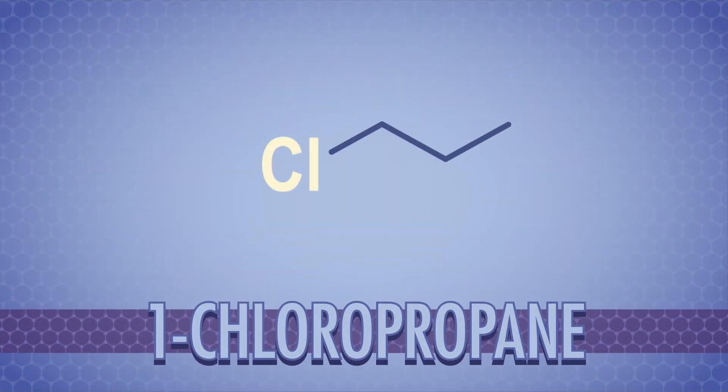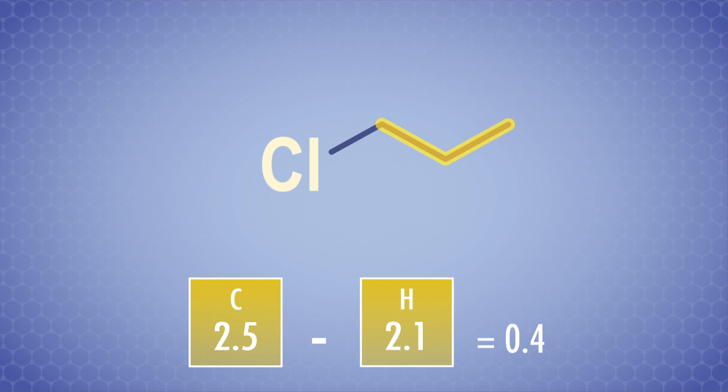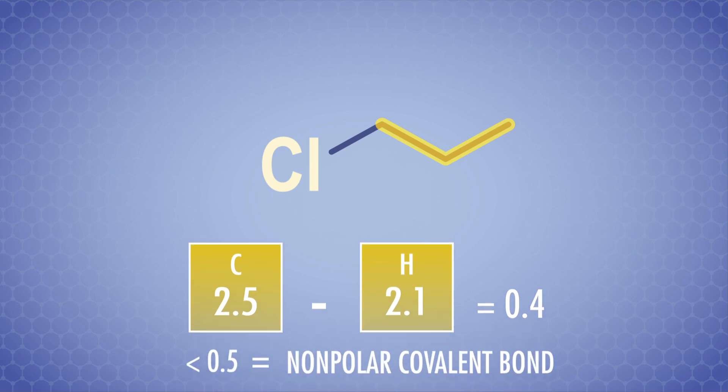Organic chemists need to have a working knowledge of the types of bonds in electronegativity, even though we don't calculate it every single time. So, let's get comfier with dipoles and continue building our chemical intuition by looking at one chloropropane. From Pauling's electronegativity scale, we can see that the electronegativity difference between the carbons and hydrogens on most of the chain is really small. So, those are all nonpolar covalent bonds.